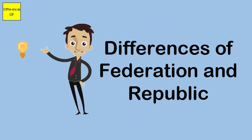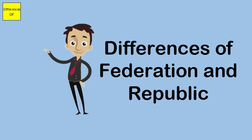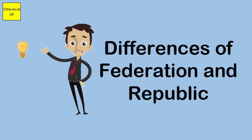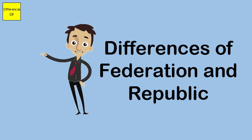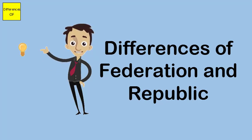A federation ensures individual states enjoy more powers, while a republic gives more powers to the central government. Federation can be explained with the U.S. as an example, and a republic is best explained with India as an example.